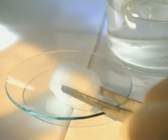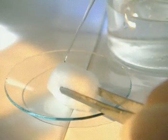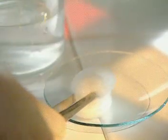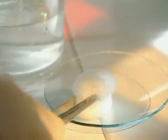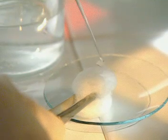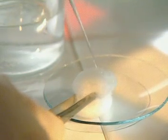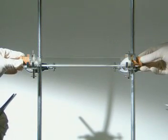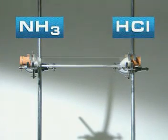A piece of cotton wool soaked in concentrated ammonia solution provides ammonia gas. Concentrated hydrochloric acid provides hydrogen chloride gas. Place the two pieces of cotton wool at opposite ends of a tube and the gases spread out.